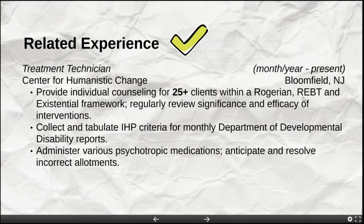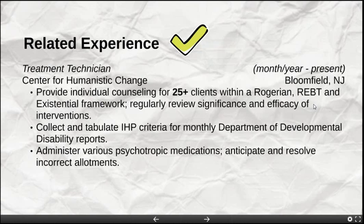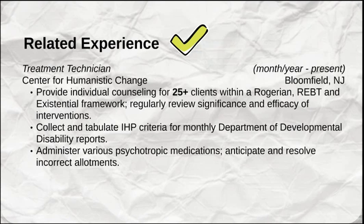If you have an acronym in a bullet point and you're not sure your audience will know what it means, spell it out — in this case, REBT stands for rational emotive behavioral therapy. Also watch for 'one word greedy' situations where a single word takes up an entire line. Try amending the phrasing to bring that word back up to the previous line and save yourself a line. A quick fix is to insert an ampersand instead of 'and' to save two characters. There's no set rule on how many bullet points to have — whatever best represents your experience.